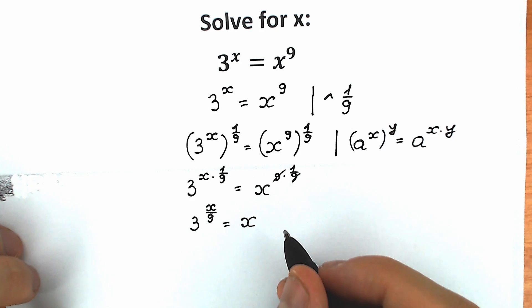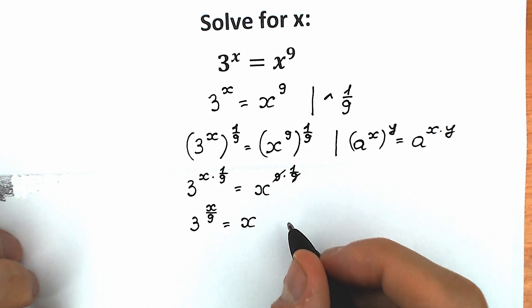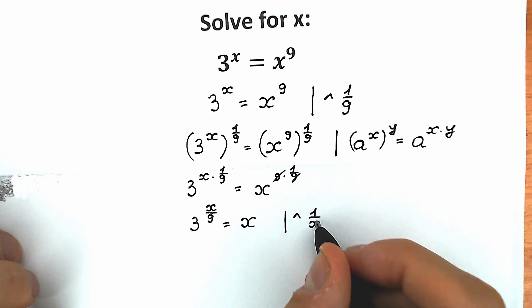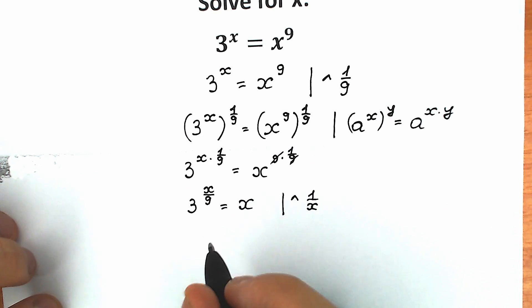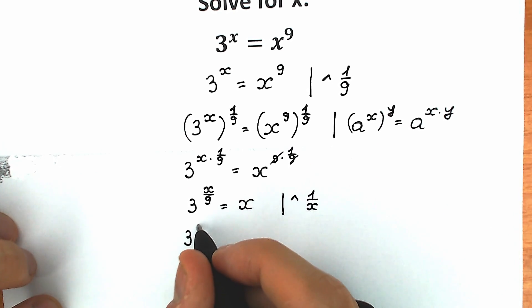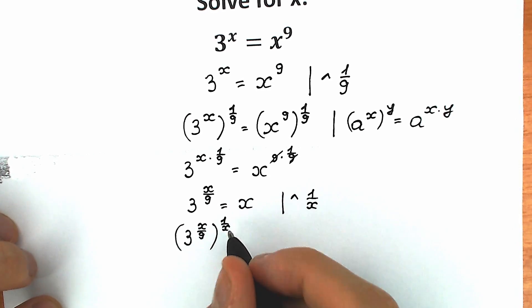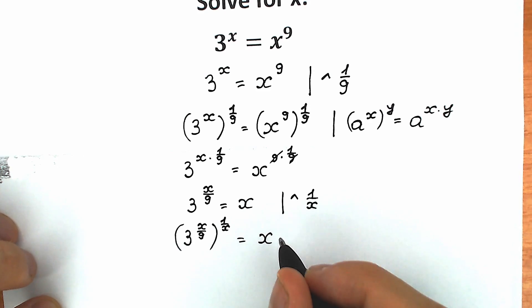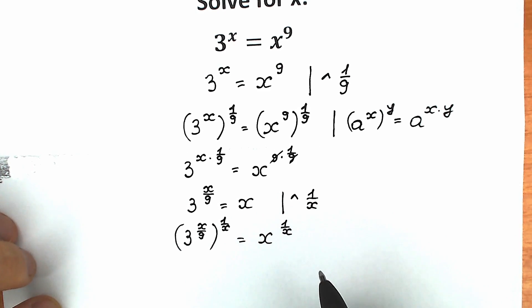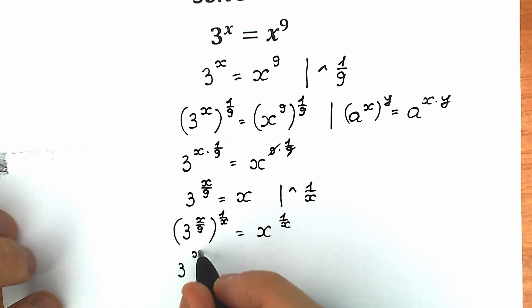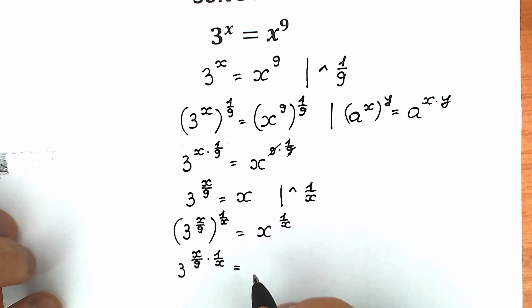Right now the second step: let's raise both sides to the power 1 over x. So we're going to raise both sides to the power 1 over x. What do we have right here? We have 3 to the power x over 9, we raise this to the power 1 over x, equal to x to the power 1 over x. Let's apply the same property as before. As a result, we have 3 to the power x over 9 times 1 over x, equal to x to the power 1 over x.